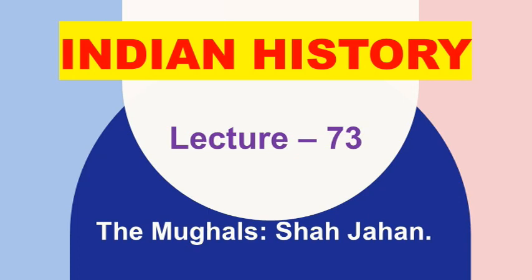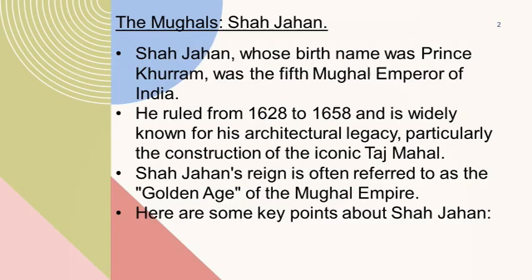Shah Jahan, whose birth name was Prince Khurrum, was the 5th Mughal Emperor of India. He ruled from 1628 to 1658 and is widely known for his architectural legacy, particularly the construction of the iconic Taj Mahal. Shah Jahan's reign is often referred to as the Golden Age of the Mughal Empire.